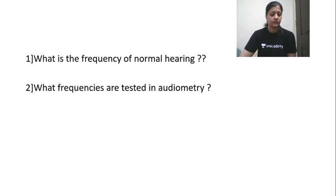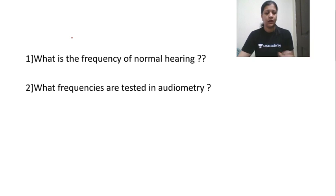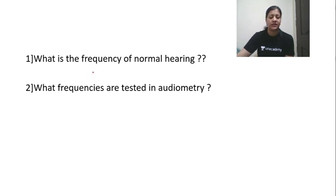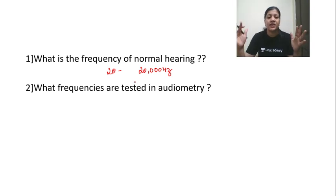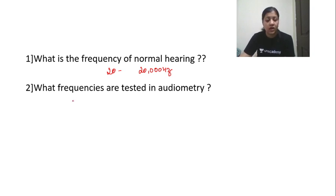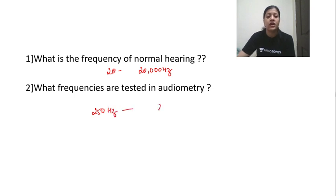We will start with tuning fork tests. What is the frequency of normal hearing? Humans can hear sounds which lie between 20 to 20,000 hertz. This is the normal ear perception — what we can hear the best. But are we testing all these frequencies in audiometry? No. We test only the speech frequencies which lie between 250 hertz to 8,000 hertz. Only this range is tested in audiometry.